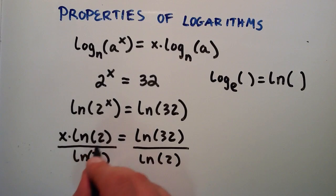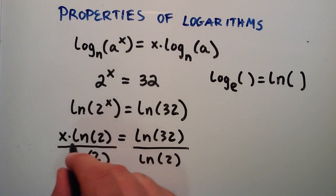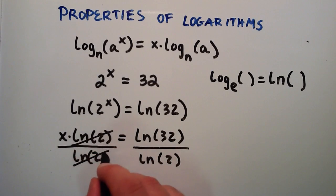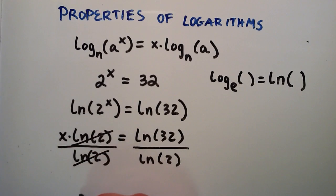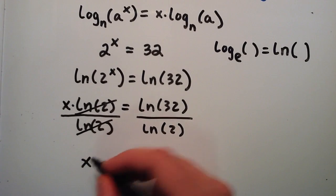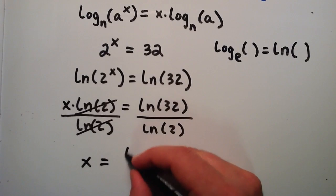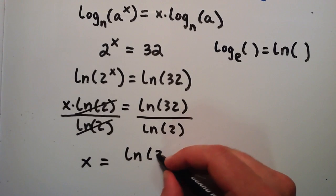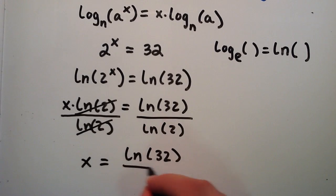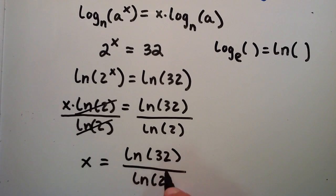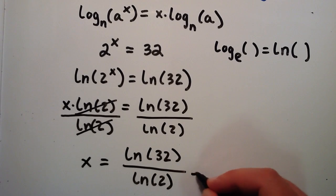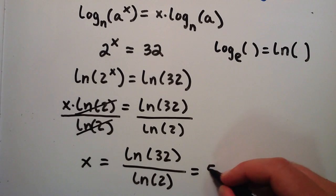Anything divided by itself is 1, so the natural log of 2 cancels with the natural log of 2, giving us x times 1, or just x. Therefore x is equal to the natural log of 32 divided by the natural log of 2. If you plug that into your calculator carefully, you would find that it gives you the answer 5.